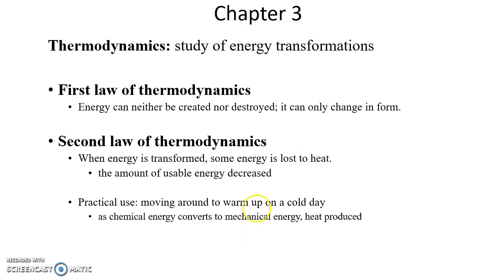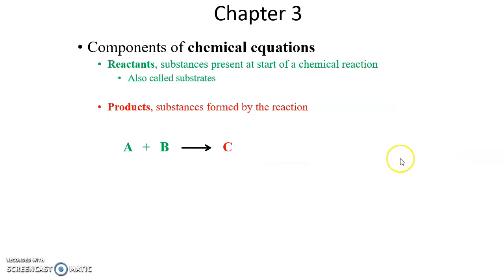Chemical equations have reactants or substrates on one side, an arrow that then points to the product. You start with the reactants, things happen during the arrow, and you get the products. The arrow points to the products.